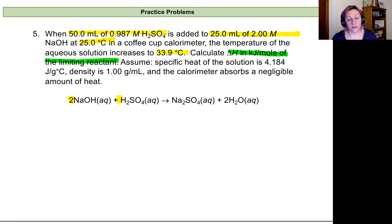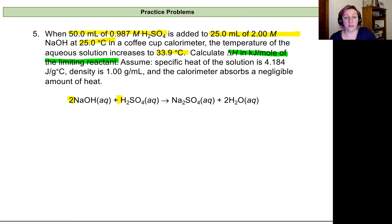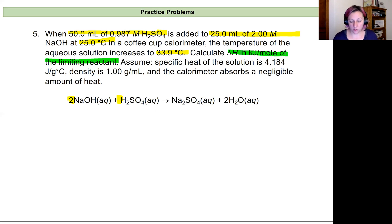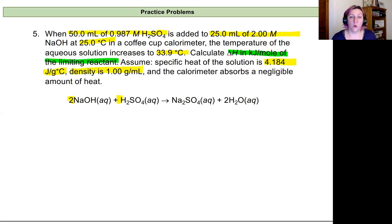Stoichiometry comes back again and again — the amount of heat produced is really dependent on which one is our limiting reactant, which also determines the sodium sulfate and water products we see. Other important information: we need a specific heat of the solution, which is given as 4.184 joules per gram degree Celsius. We're also told to assume the density of the solution is 1 gram per milliliter and that the calorimeter absorbs no heat — it all gets absorbed into the solution.